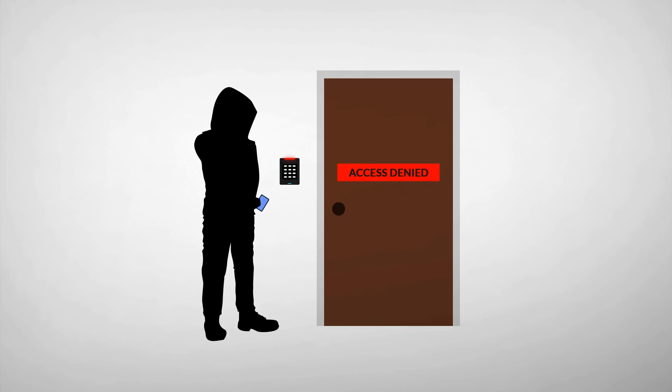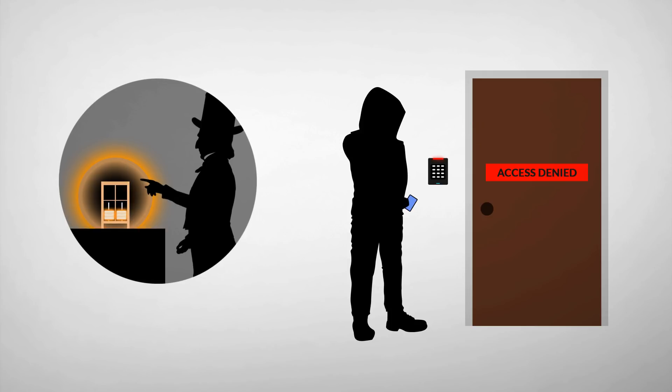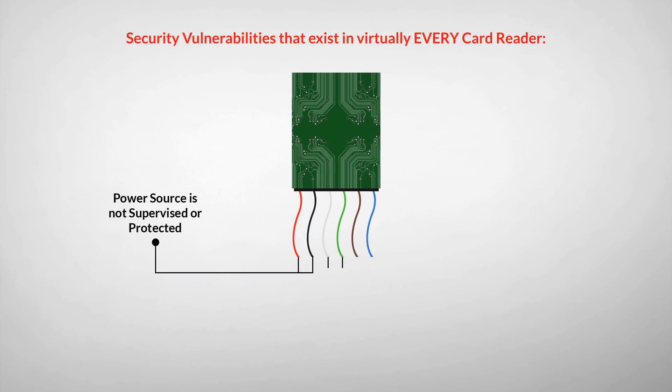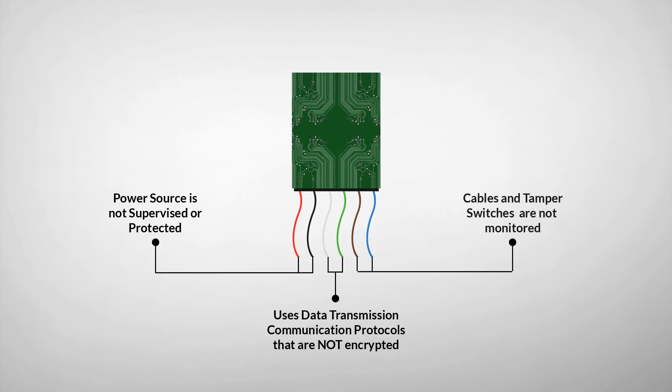But did you know that these systems rely on outdated technologies that can be easily bypassed? This is because older card reader systems have numerous security vulnerabilities, and these weaknesses can be quickly exploited by many types of security hacking devices available all over the internet.